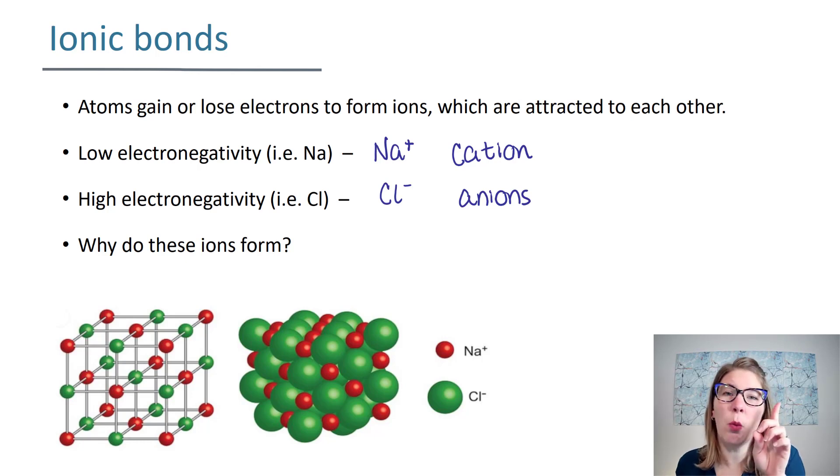If you only need one more electron to get that full outer shell you're going to steal an electron from something else. If you have one too many electrons you're not going to get seven more. Instead you're going to lose that one electron. So these ions form and then what ends up happening is they make this lattice.